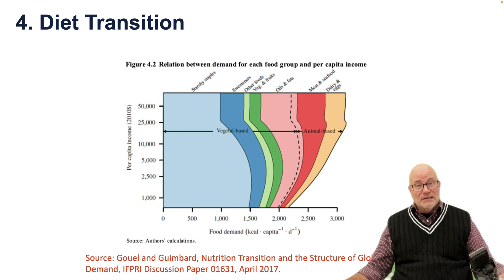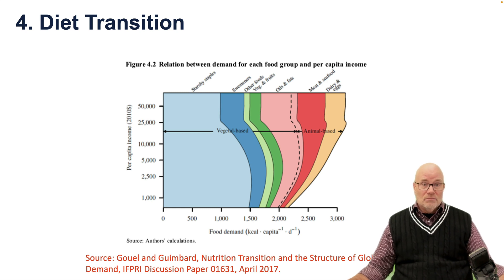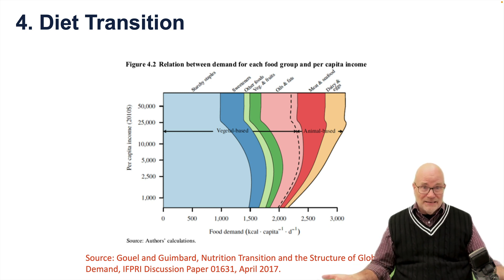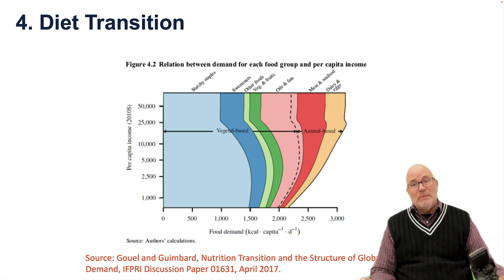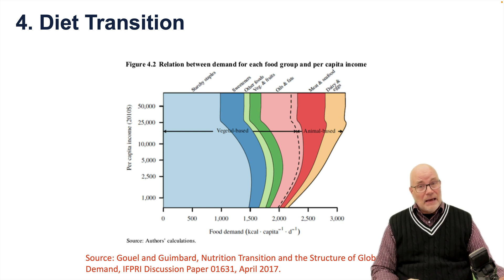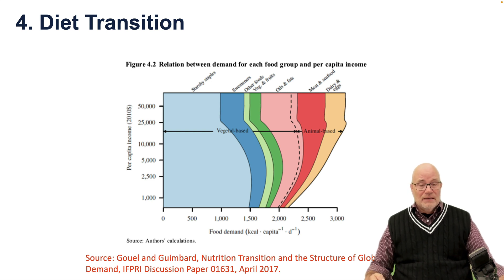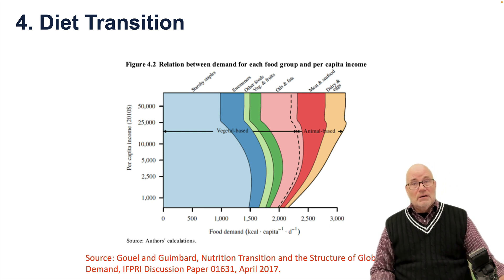Animal-based calories put more demand on land than vegetable-based or crop-based calories, because the animal has to consume calories to maintain itself. To get one calorie from meat, many more land-based calories are needed — usually at a ratio of at least five to one. So as we increase meat demand, we greatly increase the need for crop production, because animals eat feed crops that are produced on fields.